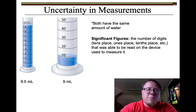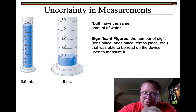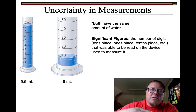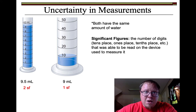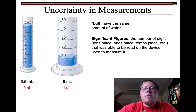Looking at the first measurement, I was able to read the ones place, because I went from 9 to 10. So I can read the ones place, and I'm estimating on the tenths place — that first decimal — so that would be two significant figures. The other one, I'm only able to read the ones place, so that's one significant figure.